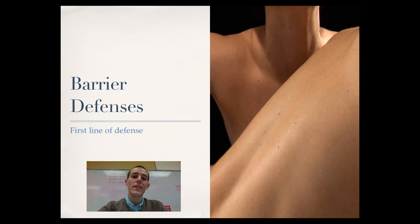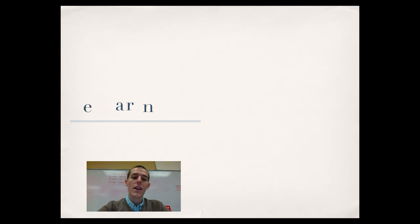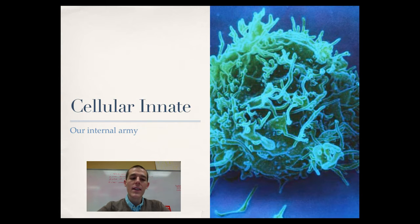Now the next set is going to be cellular innate defenses and these are our internal army. This is a bunch of cells that don't really have special recognition software for influenza or hepatitis or the cold or whatever. These are just general like I am going to go out and take out anything that is not part of this body. So they are not really intelligent, they are more like big dumb animals,